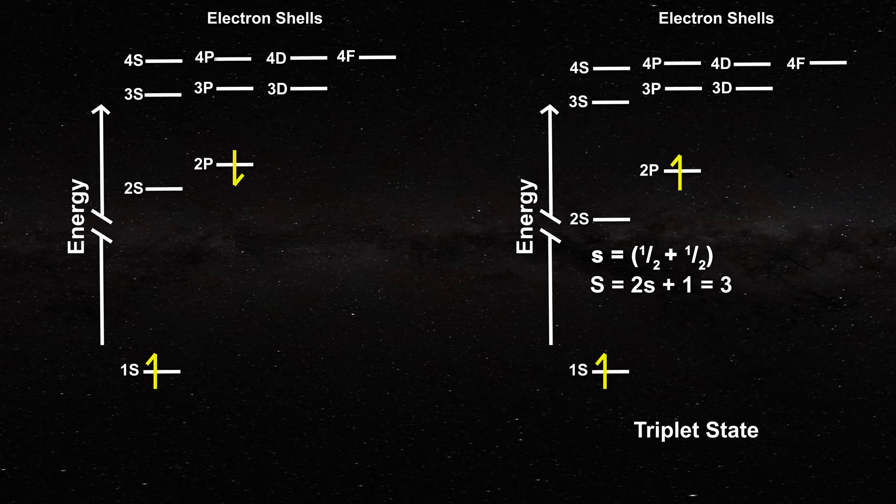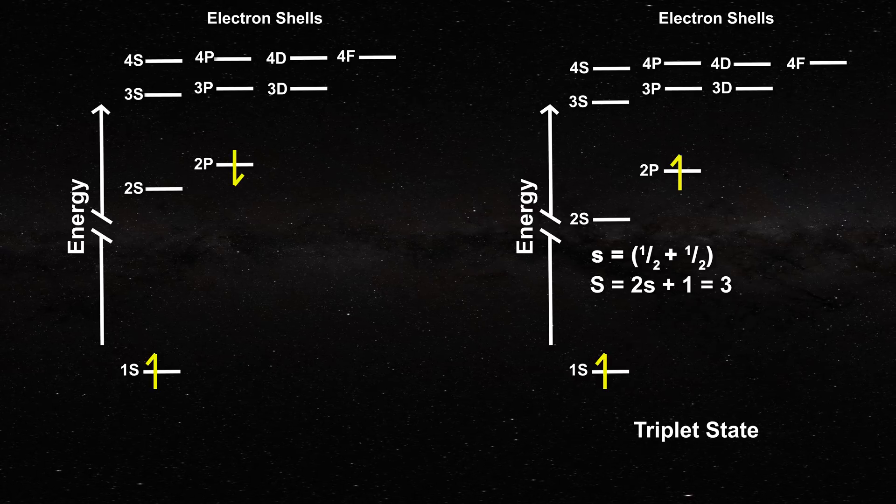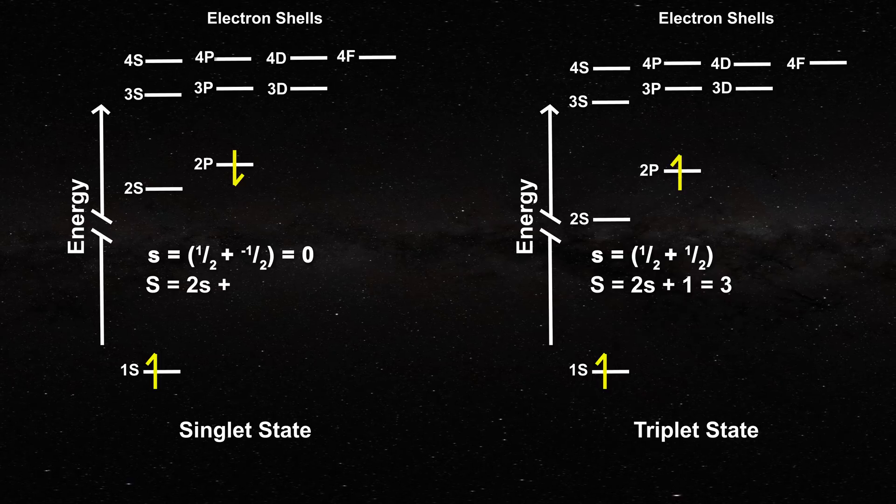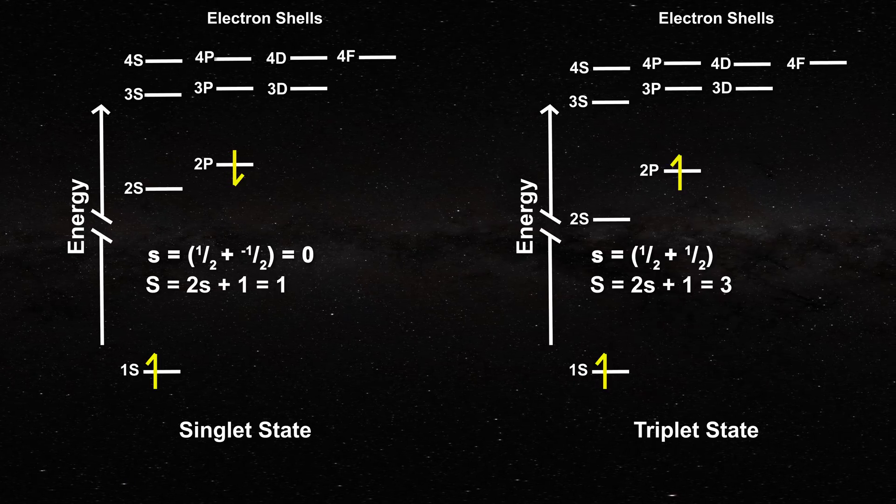If the electrons have opposite spin, then we say that we have a singlet state, since one-half plus minus one-half is equal to zero, and two s plus one is now equal to one.